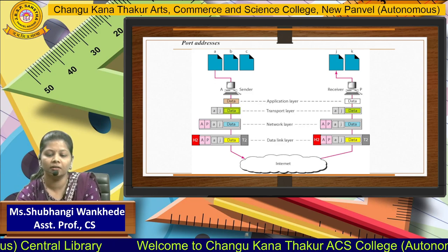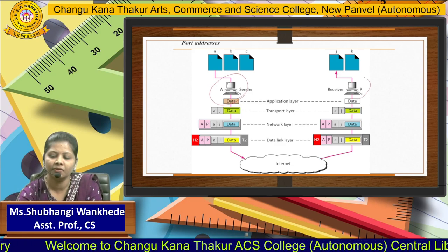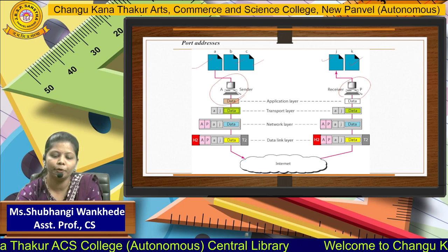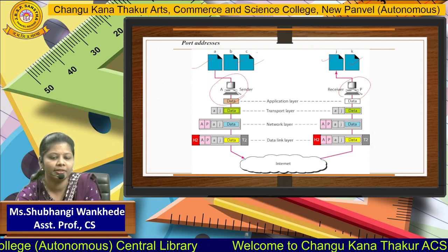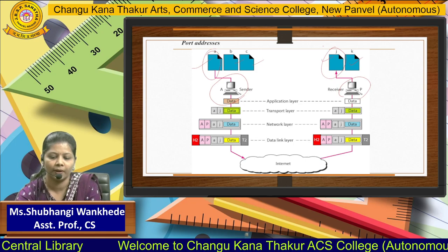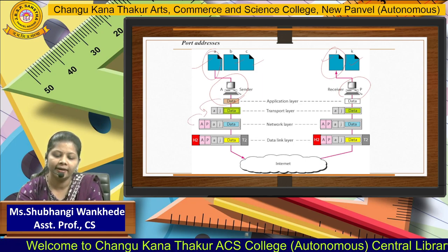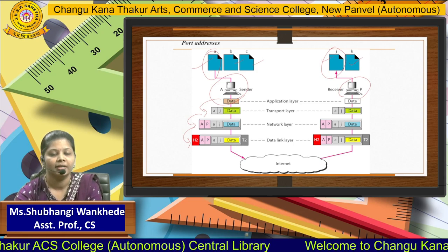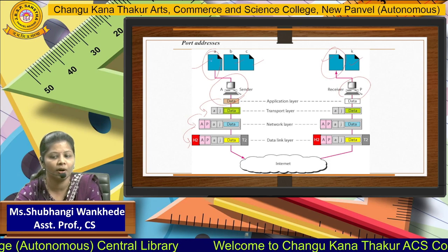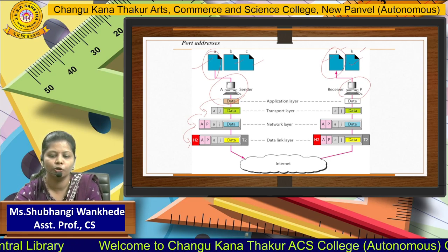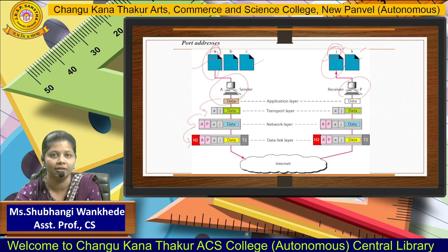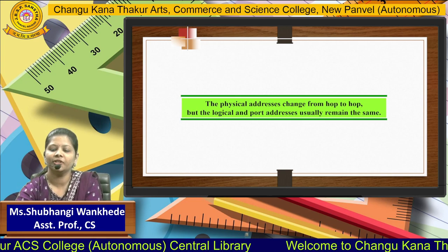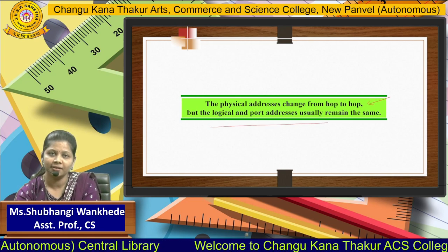Port address gives the sender and receiver a specific process-level address. Computer A is the sender having three processes: A, B, and C. It has to send process A to process J of receiver P, which also has processes J and K. Even though there are three processes on the sender and two on the receiver, process A communicates only with process J. The address of A and J is the port address, which is a specific address. Note that the physical address changes from hop to hop, while logical address and port address usually remain stable. Thank you.